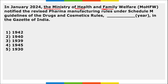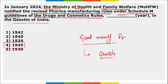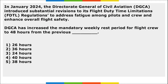The Ministry of Health and Family Welfare notified the revised pharma manufacturing rules under the Schedule M guidelines of the Drugs and Cosmetics Rules of 1945 in the Gazette of India. Schedule M was revised to ensure Good Manufacturing Practices (GMP), which improves product quality and helps fetch better prices in the international export market.